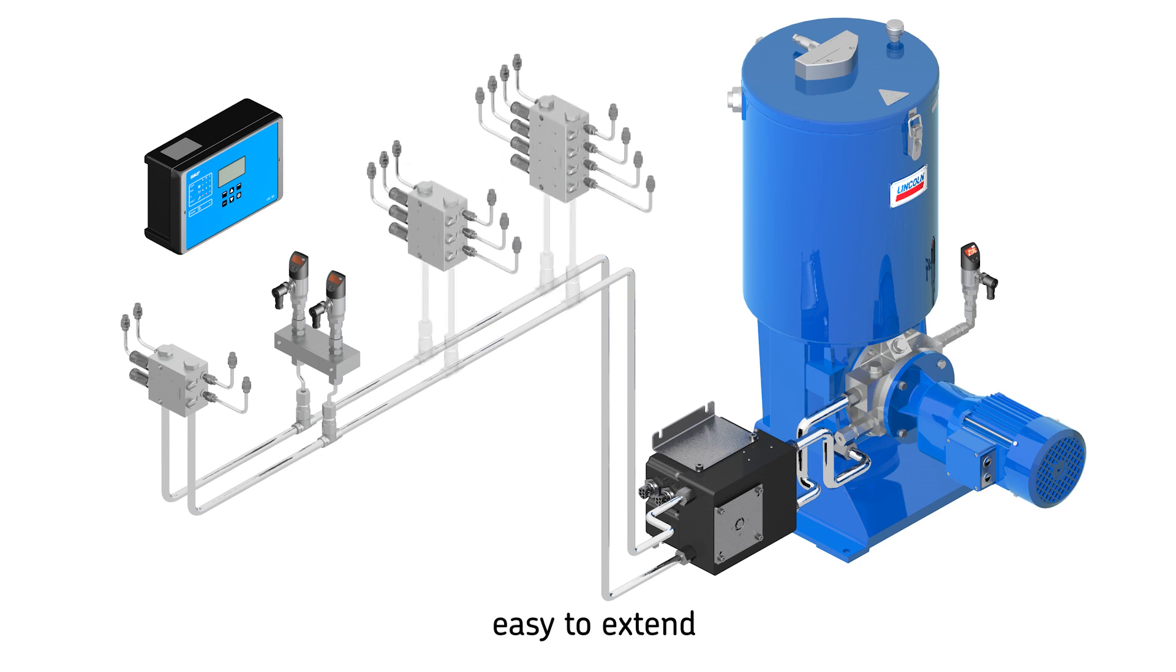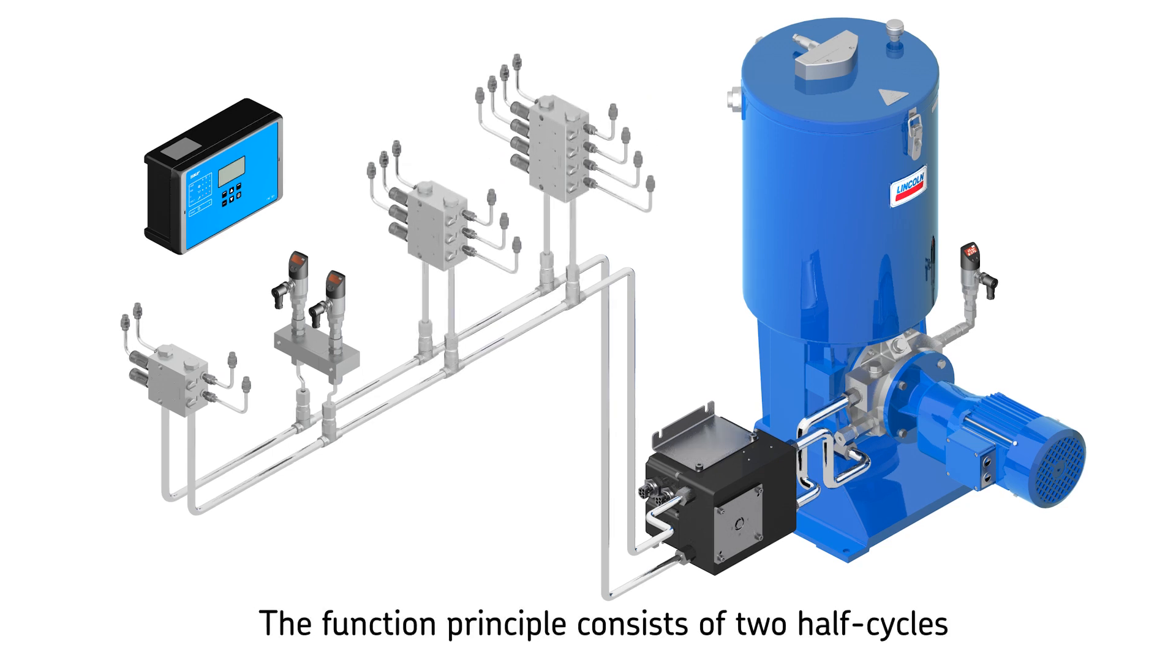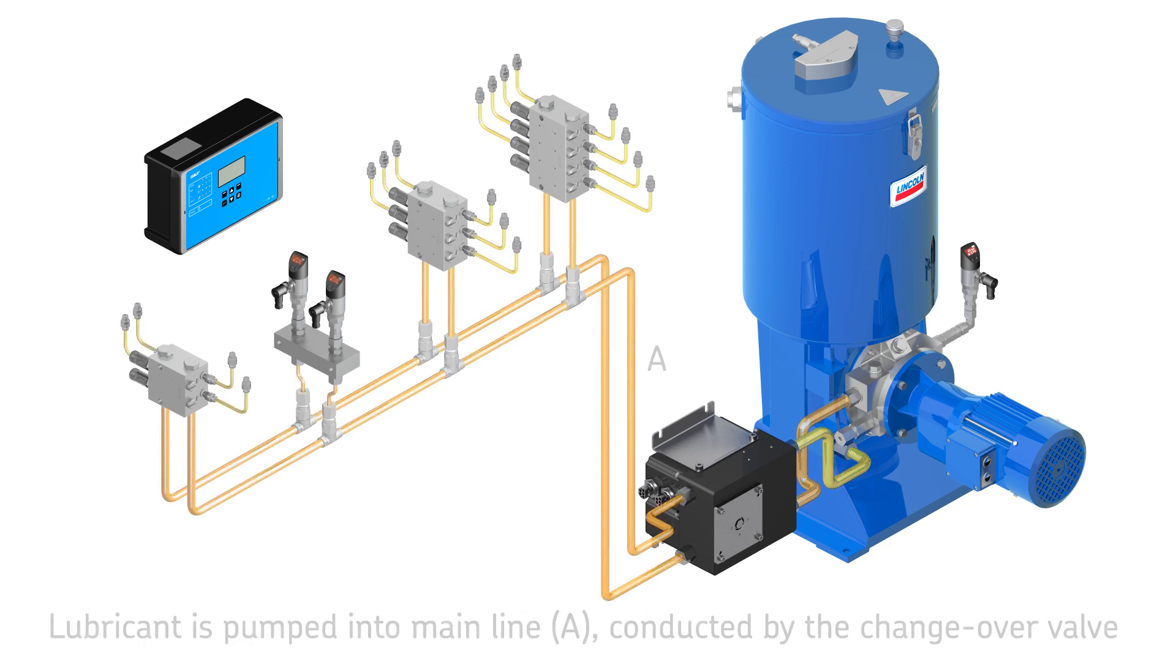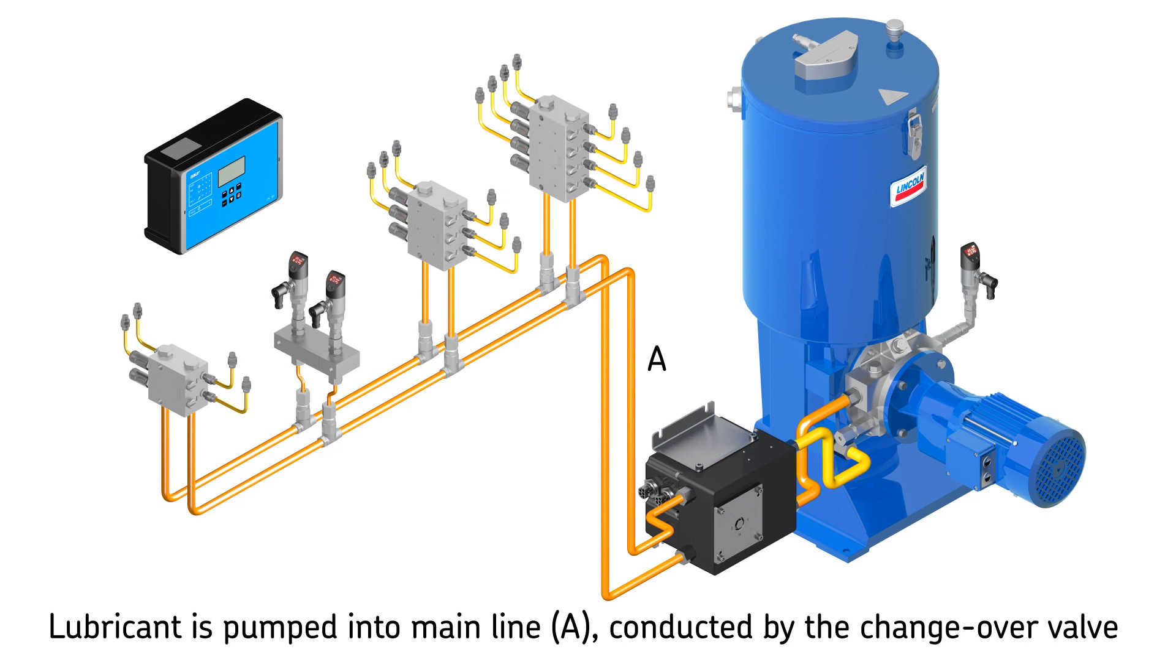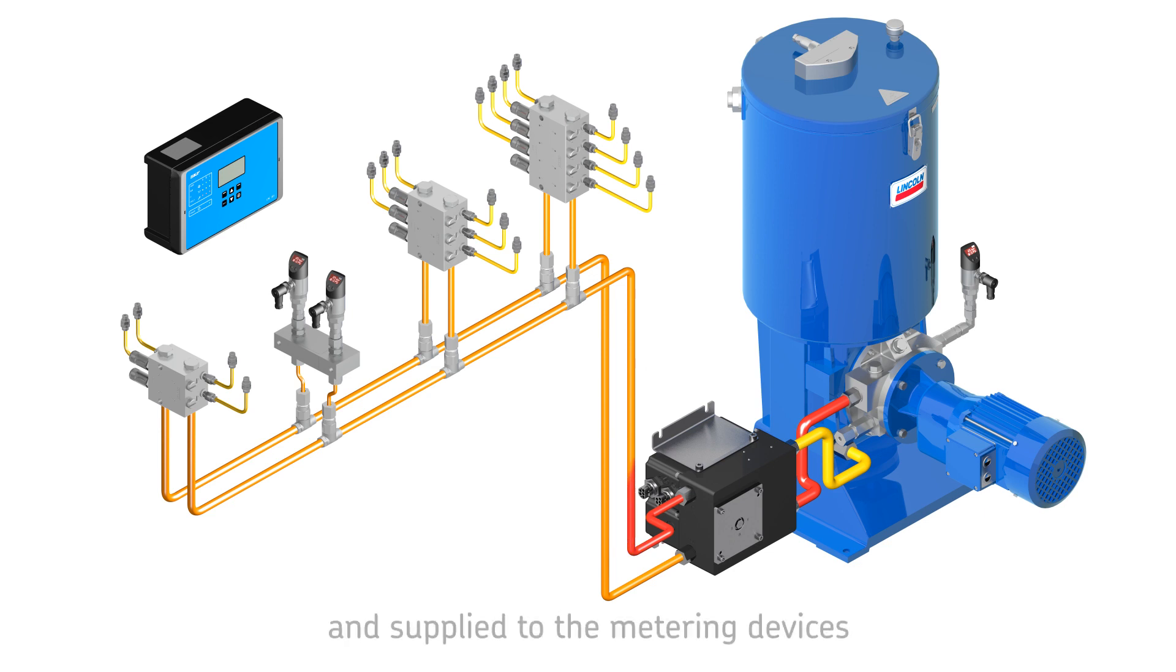The function principle of the dual-line system consists of two half-cycles. In the first half-cycle, the lubricant is pumped into main line A. The second main line B is connected to the relief line.